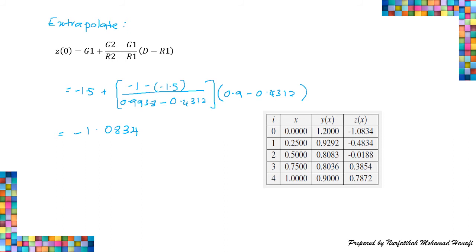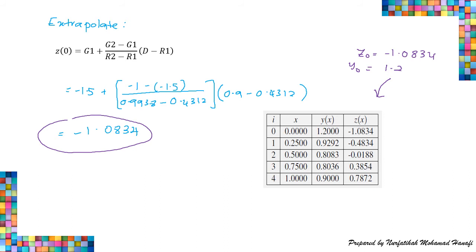We calculate again using Euler's method with the new initial guess: Z₀ = -1.0834 and Y₀ = 1.2. Using the same steps as before, here is the complete table. Checking the last value: when X = 1, our Y = 0.9, which equals the boundary condition given. We have now obtained the solution for the problem.